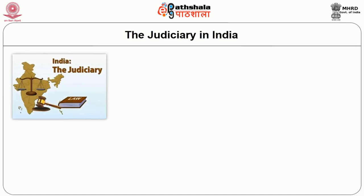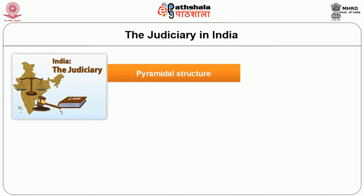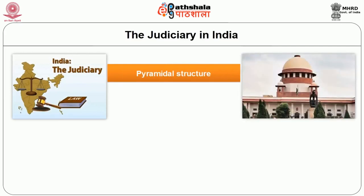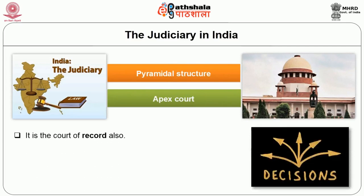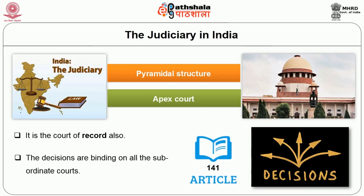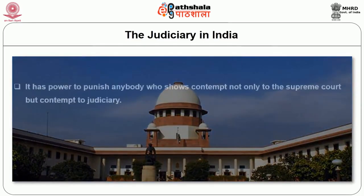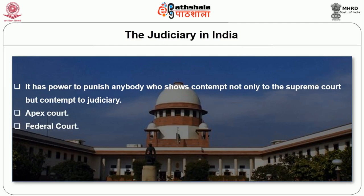The judiciary in India has a pyramidal structure and the Supreme Court of India is considered the apex court. It is also a court of record, meaning its decisions are binding on all subordinate courts under Article 141. The Supreme Court also has the power to punish anyone who shows contempt not only to the Supreme Court but to the judiciary as such. The Supreme Court is also considered as the federal court.